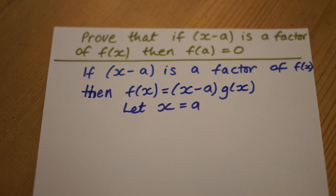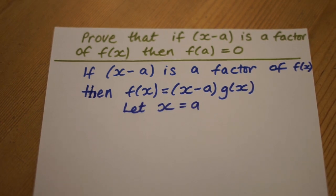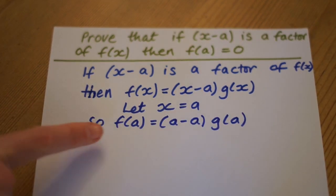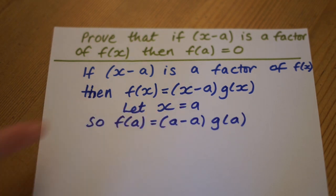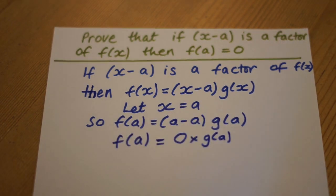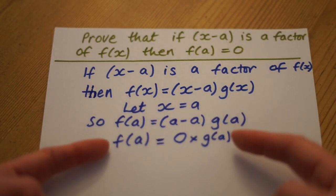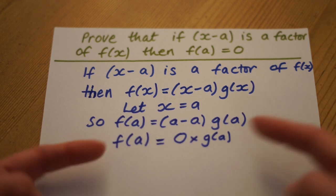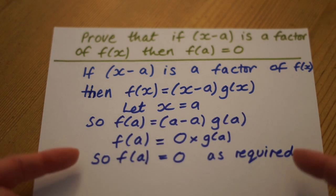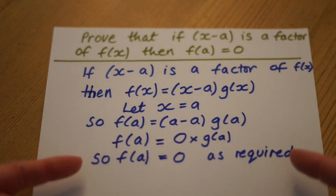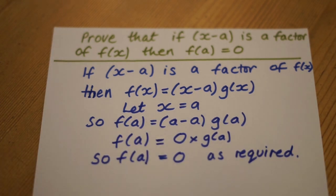If we let x equal a, we get that f of a equals a minus a multiplied by g of a. Simplified, this gives f of a equals 0 multiplied by g of a, so f of a equals 0, as required.